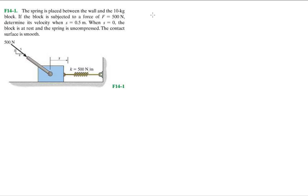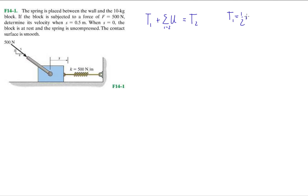The principle of work and energy is given as T1 plus the summation of all your potential energies — both conservative and non-conservative — equals T2. If you're studying physics you might see it as KE for kinetic energy. T1 is your initial kinetic energy, one-half m v1 squared, and T2 is your final kinetic energy, one-half m v2 squared.